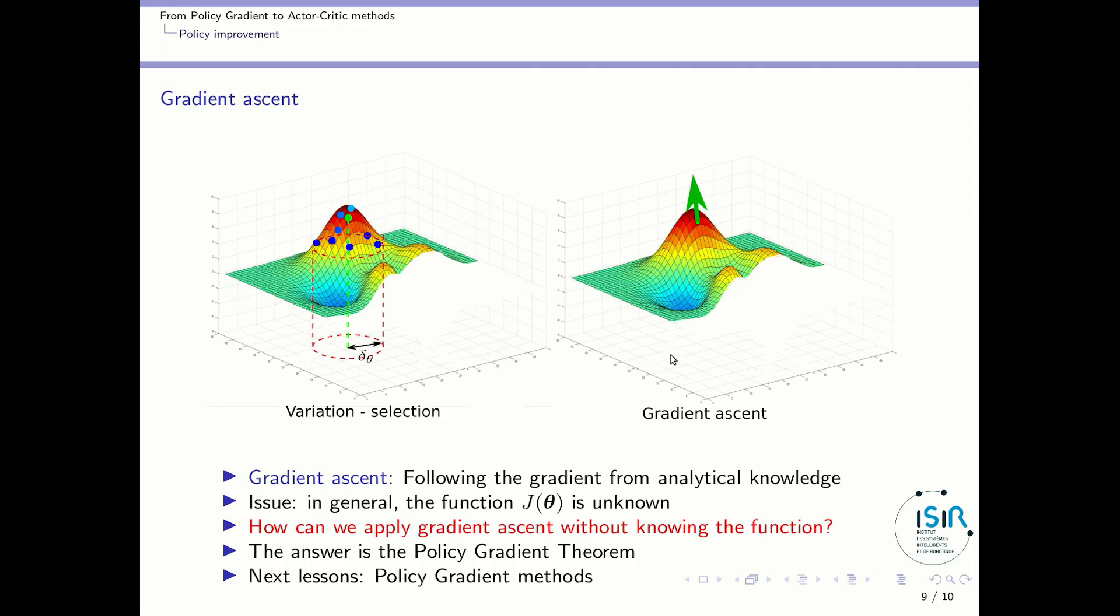The alternative approach to variation selection would be gradient ascent. The idea is that if we knew the function J(θ) we could compute the derivative of the function J(θ) close to the point where we are and follow the direction of ascending gradient so as to go to a local optimum. The issue is that in general this function J(θ) is unknown. If you consider the robot example it is very hard to know whether by tuning this parameter in this way I will increase or decrease my performance. So the question, the central question in this class is how can we apply gradient ascent without knowing the J(θ) function?